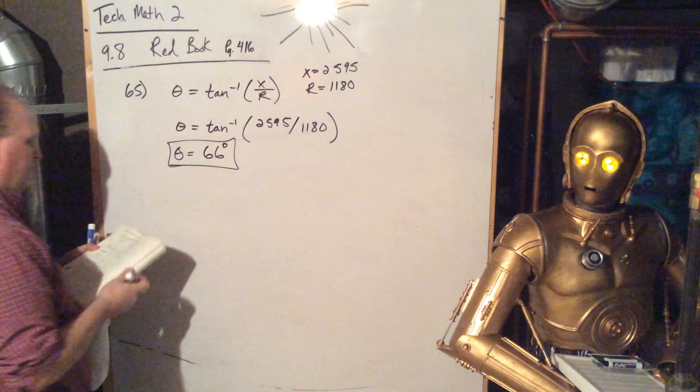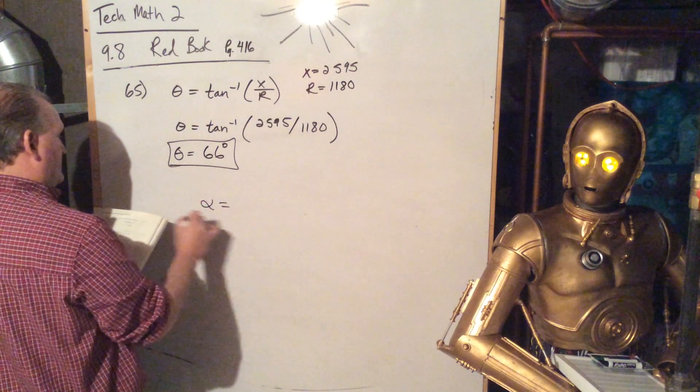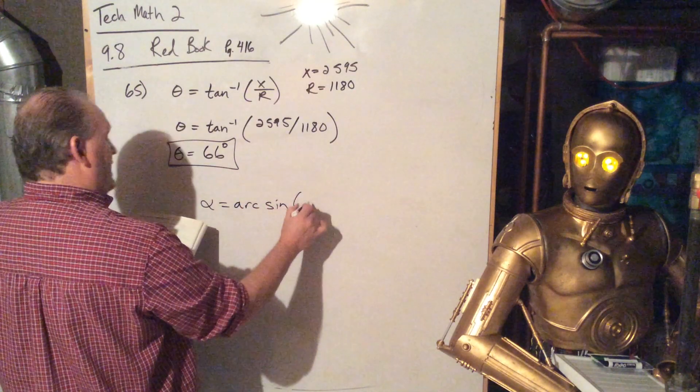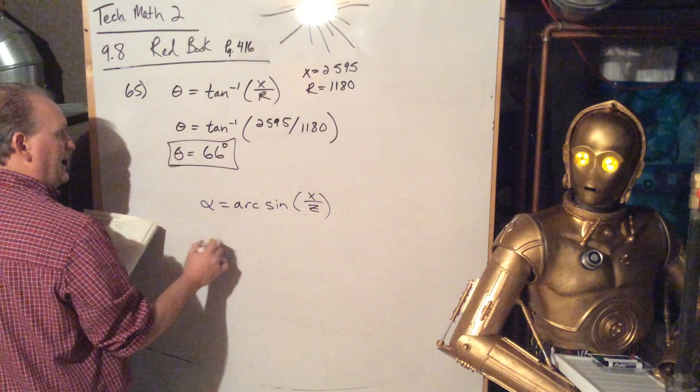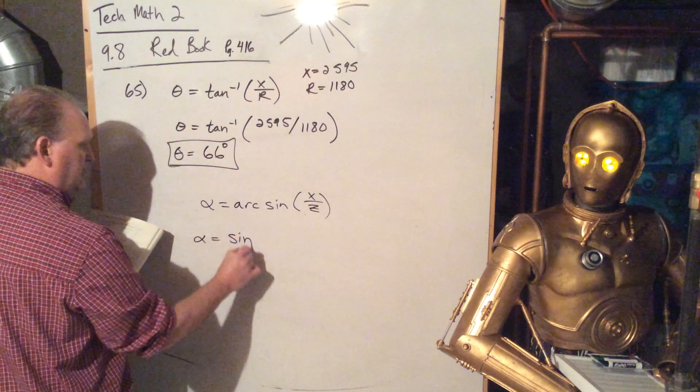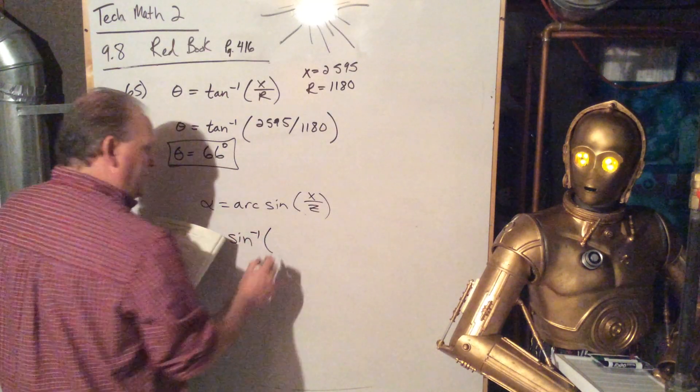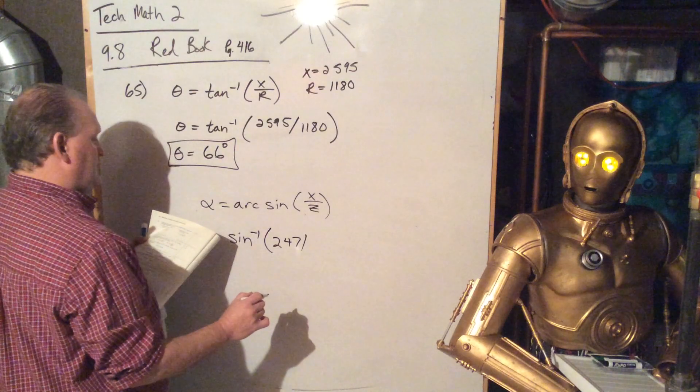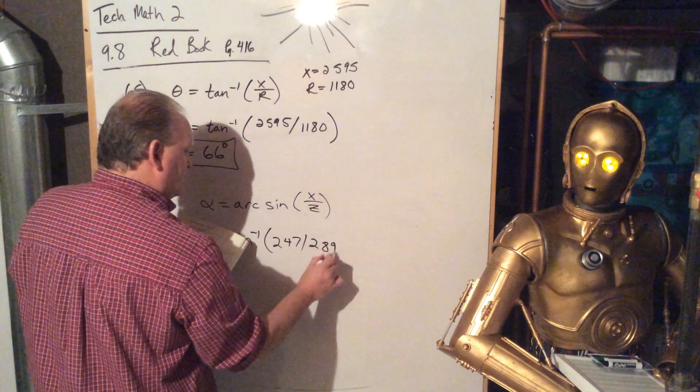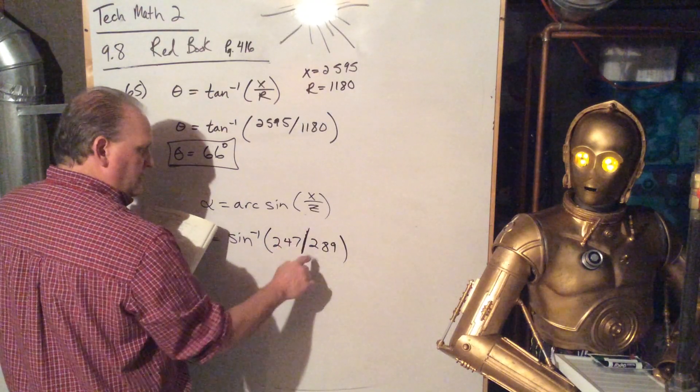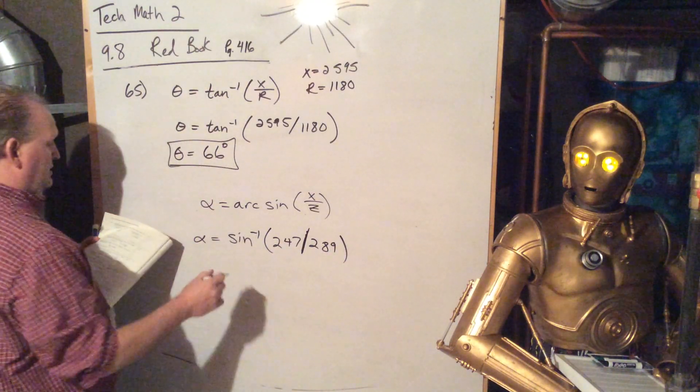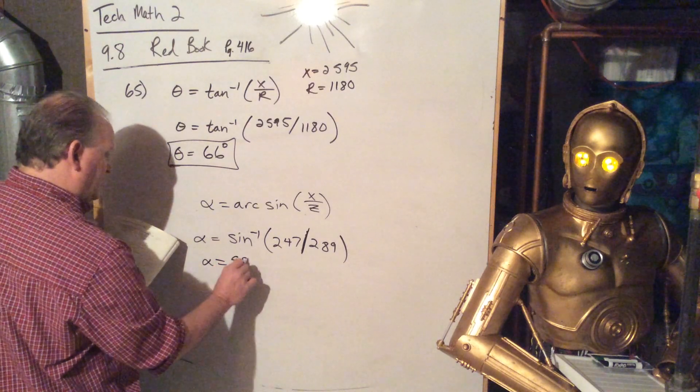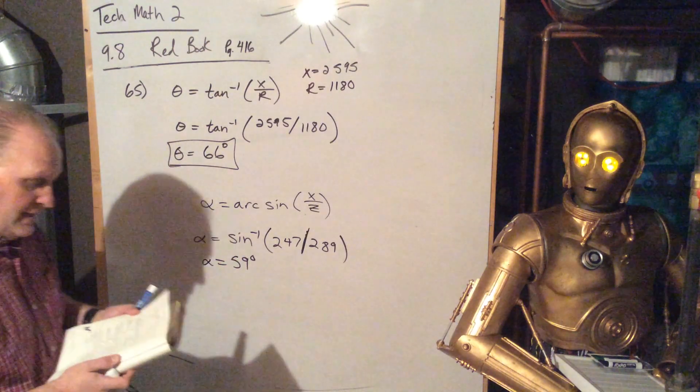And then for the second part, they want alpha is equal to the arcsine of x over z, but again, we're going to put it in our calculator as second sign, that'll be negative 1. And then they told us x was equal to 247, and z is equal to 289. So 247 divided by 289, end parenthesis, hit enter, and you should get 59 degrees. If you are not getting 59 degrees, there's a chance that your calculator is in radians instead of degrees, and switch it up.